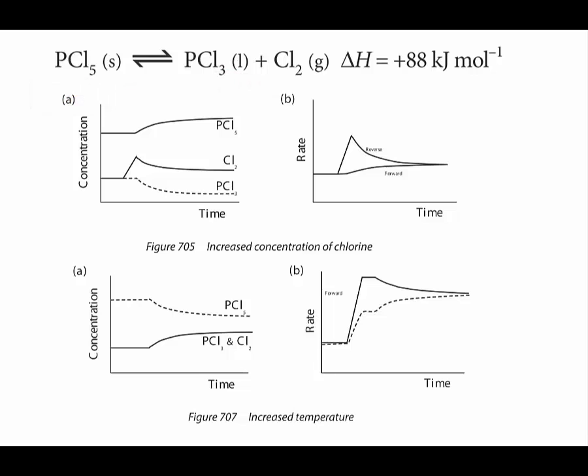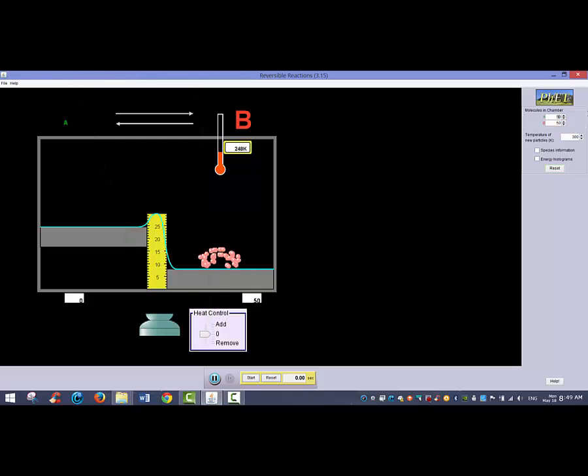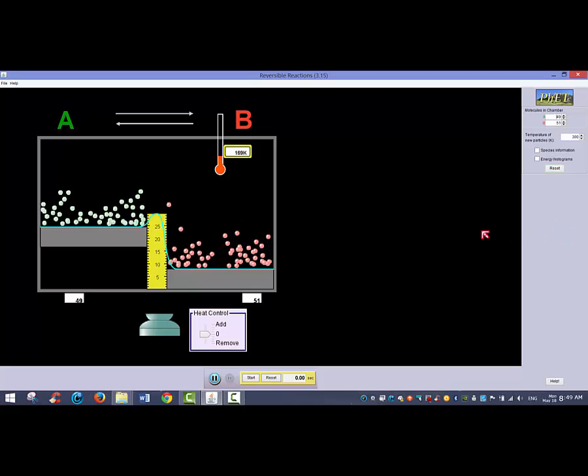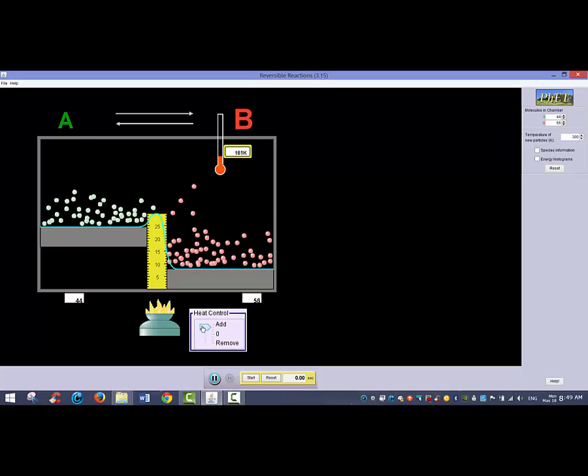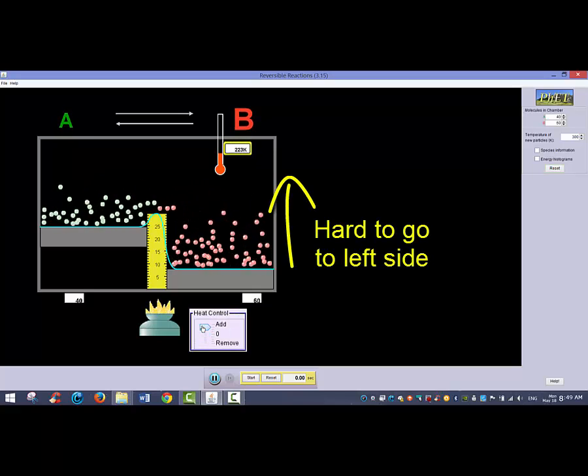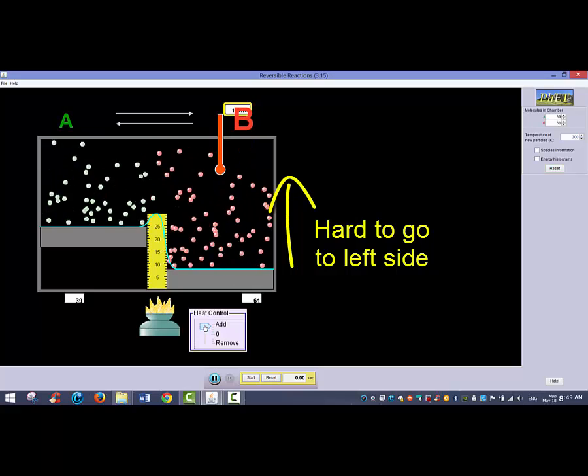Temperature is the only circumstance that changes the equilibrium constant as it unequally makes endothermic reactions easier. This demonstration shows that increasing temperature does little to help reactions in the exothermic direction. As endothermic reactions have such a large activation energy, an increase in temperature has a significant effect.